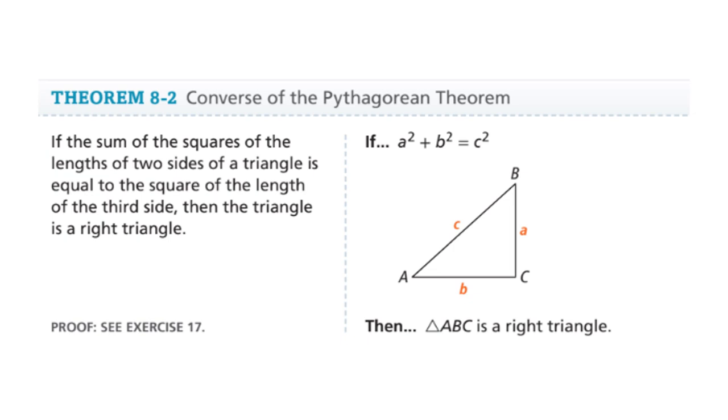So, the converse of the Pythagorean theorem states that if a squared plus b squared is equal to c squared, then it is a right triangle. Okay, then, how can I know if the triangle is acute or obtuse? If it's less than c squared, it means that the triangle is obtuse. If it's greater than c squared, it will be acute.